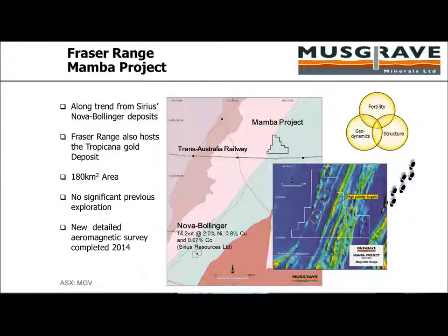Musgrave Minerals was formed in 2011, primarily as a greenfield explorer. We currently have a tenement in the Fraser Range that we were fortunate to peg when the ground came available — after the discovery of Nova and Bollinger. We were one of eight exploration companies to peg that ground, and in WA, if you have a valid application meeting certain technical criteria, your name goes in the hat through a ballot process. We were fortunate enough to win the ballot. When we won this tenement application, our share price went up about 30% — just on the back of an application about 150 kilometers away, on trend with Nova and Bollinger.